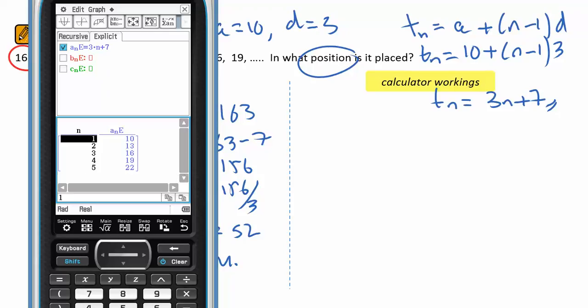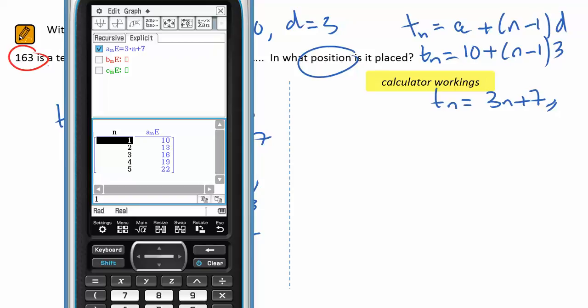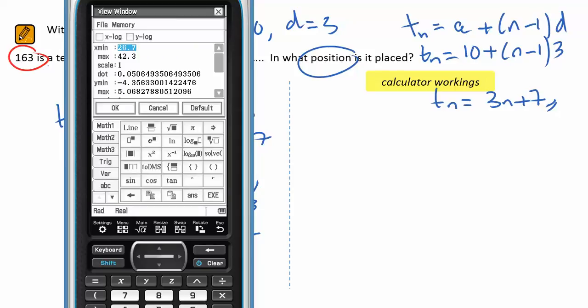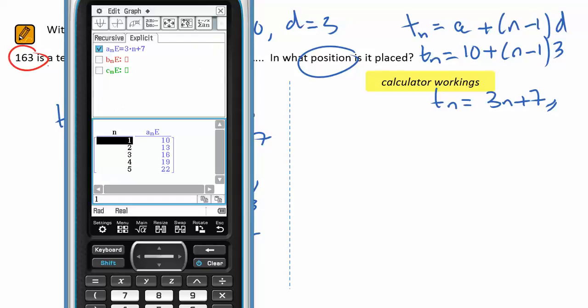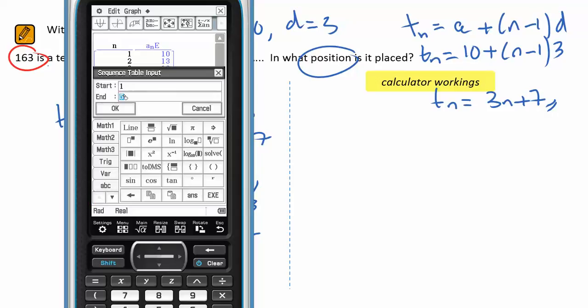Now, I'll need to go a little bit further than the fifth term, of course, because I'm not going to find 163 that way. So what I'm going to have to do here is select that option, and we'll try 100.